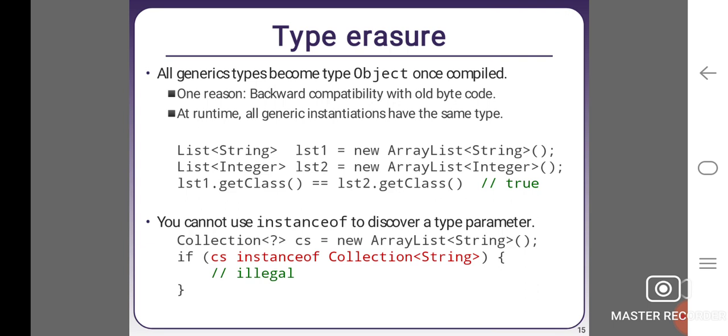List<String> list1 = new ArrayList<String>(); List<Integer> list2 = new ArrayList<Integer>(); list1.getClass() == list2.getClass(); // true. You cannot use instanceof to discover a type parameter. Collection<?> cs = new ArrayList<String>(); if (cs instanceof Collection<String>) { // illegal }